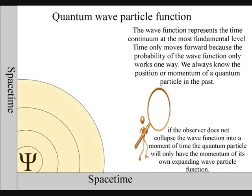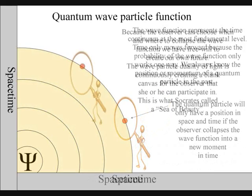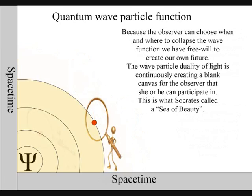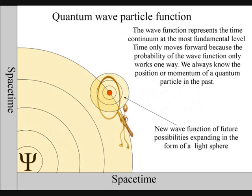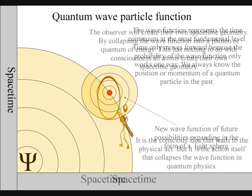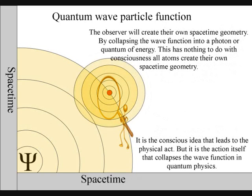But it is because life, in the form of an observer, can choose when and where to collapse a wavefunction that we have free will. Life will create its own ripples in the fabric of spacetime, forming its own broken symmetry of its own evolutionary path.